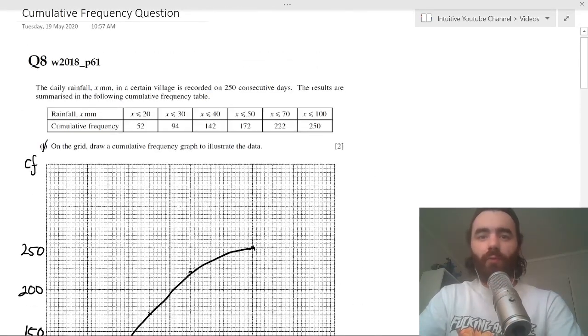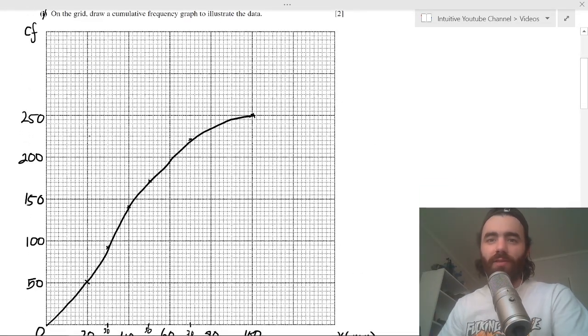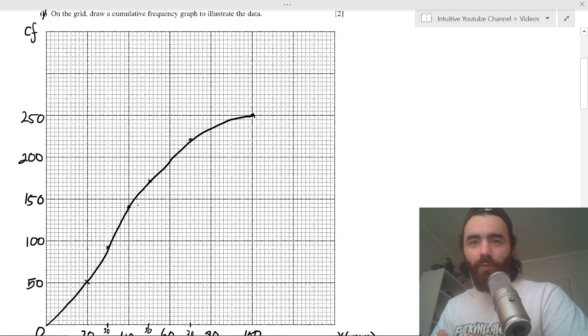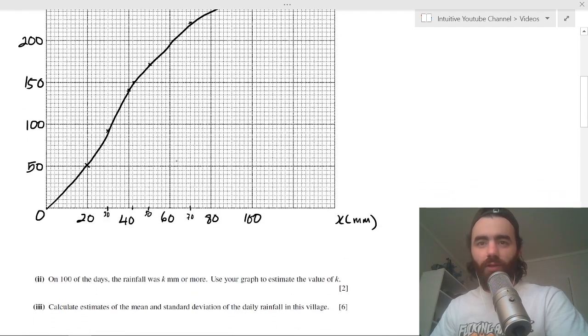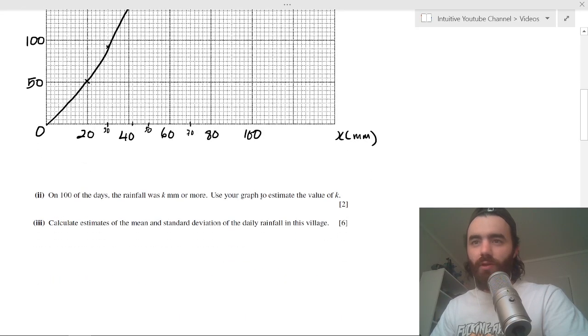This will be from 150 to 250. So for k or more, we need to look at the 150 value. So at 150 we just look at our graph here, it hits here, we go down, we look at that. Well, that occurs at 42, this point is 42.